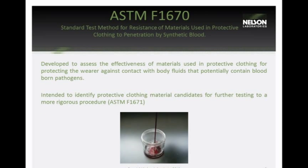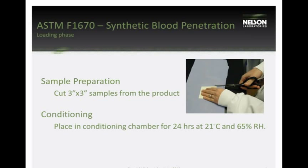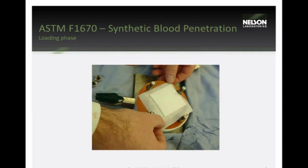The first test method is a gown and drape barrier test called ASTM F1670, or synthetic blood testing. This test method was designed to test the product against penetration by blood and body fluids. It's a precursor test to the viral penetration test. It uses synthetic blood adjusted to mimic real blood — the viscosity, surface tension, and density have all been matched to real blood. The test entails cutting samples into 3-inch by 3-inch squares, conditioned for 24 hours at 21°C and 65% relative humidity prior to testing.